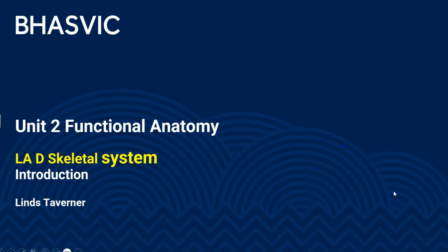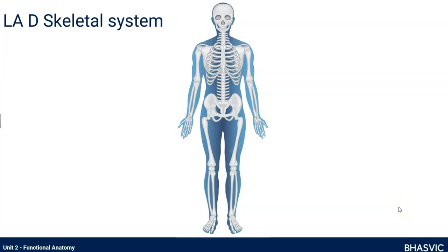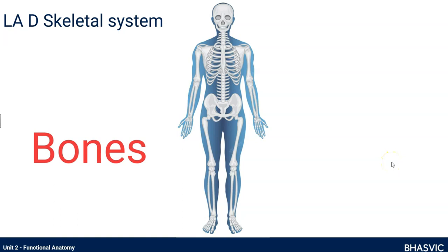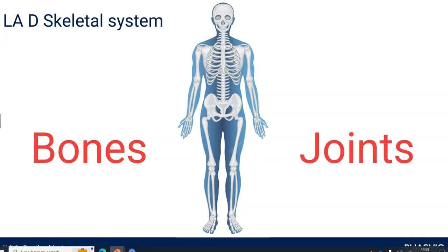Hello, this video is for BTEC Sport and Exercise Science and is the first of several for Unit 2 Functional Anatomy. The purpose of this video is to introduce the learning aim: the Skeletal System. We'll be learning about how bones are constructed, how they grow, the names of bones, the different types of bones, and the joints of the body.